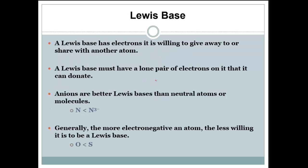A Lewis base has electrons it is willing to give away or to share with another atom. A Lewis base must have a lone pair of electrons on it that it can donate. Anions are better Lewis bases than neutral atoms or molecules.